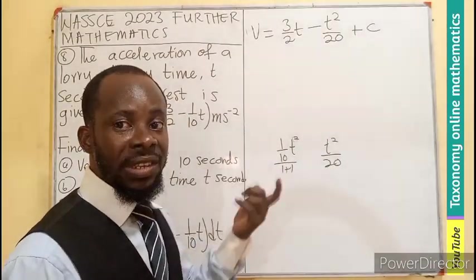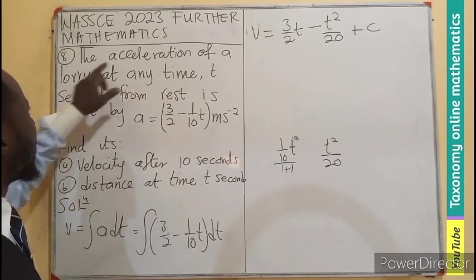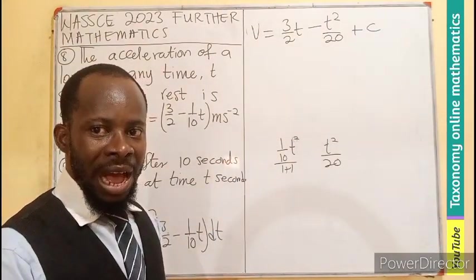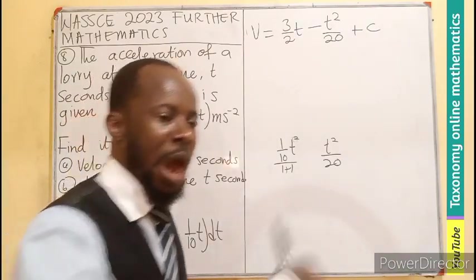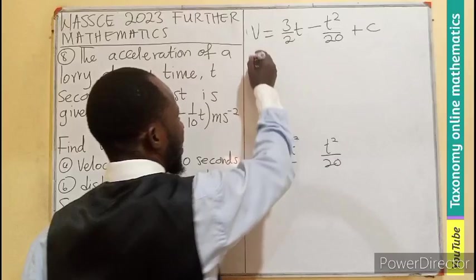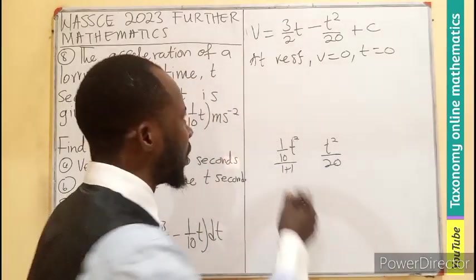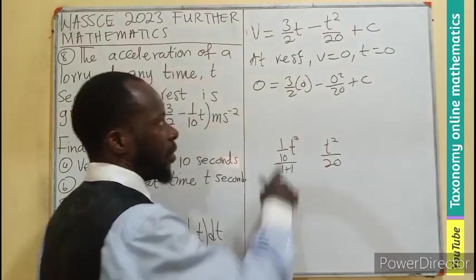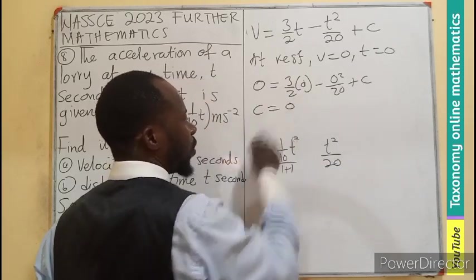We don't know what the c stands for, but we can find the c because we were told that the lorry is moving at rest. There's acceleration of a lorry at any time t seconds from rest. From rest, the velocity is going to be 0. They are now about to start. As I'm here about to make a movement, I am 0. The time that will be starting, this is now, will be 0 before I will move. So it means the time and the velocity will be 0 when the lorry is at rest. At rest, we can see velocity will be 0 and the time will also be 0. So let's do substitution. 0 will be equal to 3 on 2, 0 minus 0 squared on 20 plus c. All this will be 0. 0 equals to 0 plus c. Meaning c will just be equal to 0.